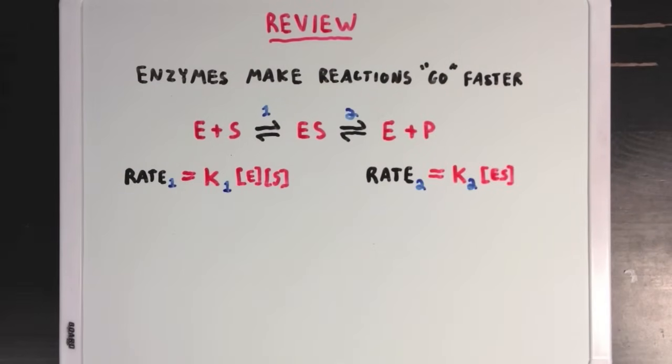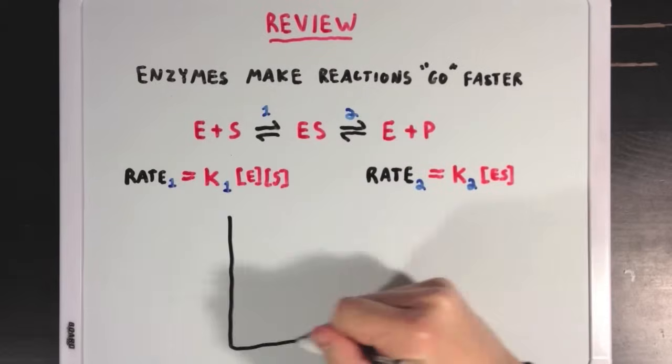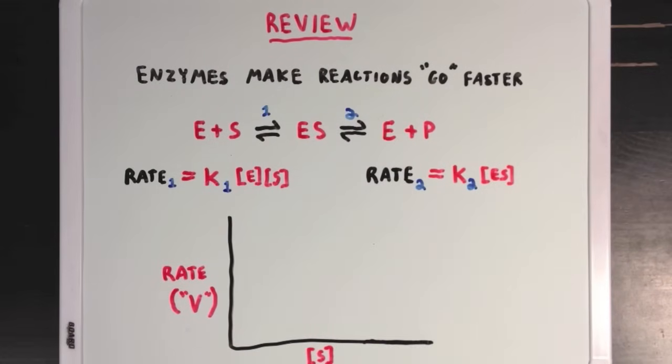Let's also review the idea that if we keep the concentration of enzyme constant, then at really high substrate concentrations, we'll hit the maximum speed for a reaction, which we call Vmax.